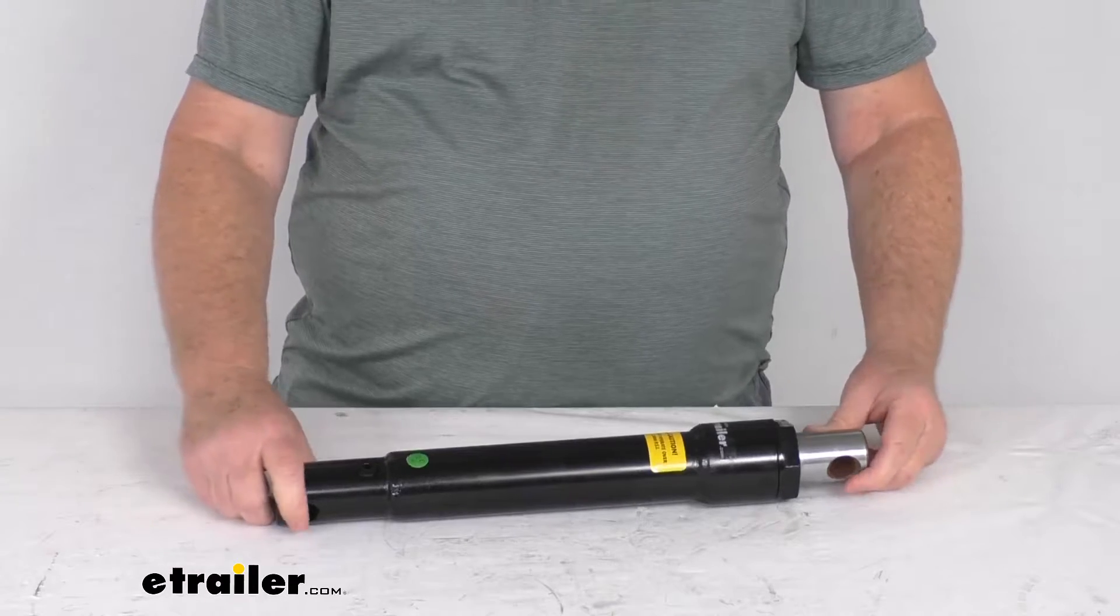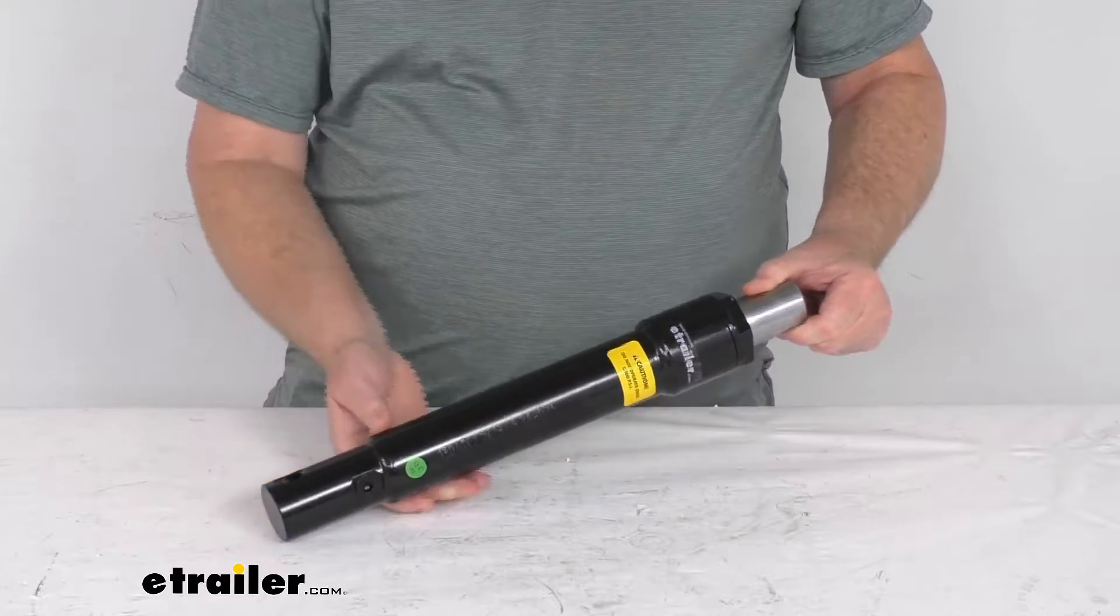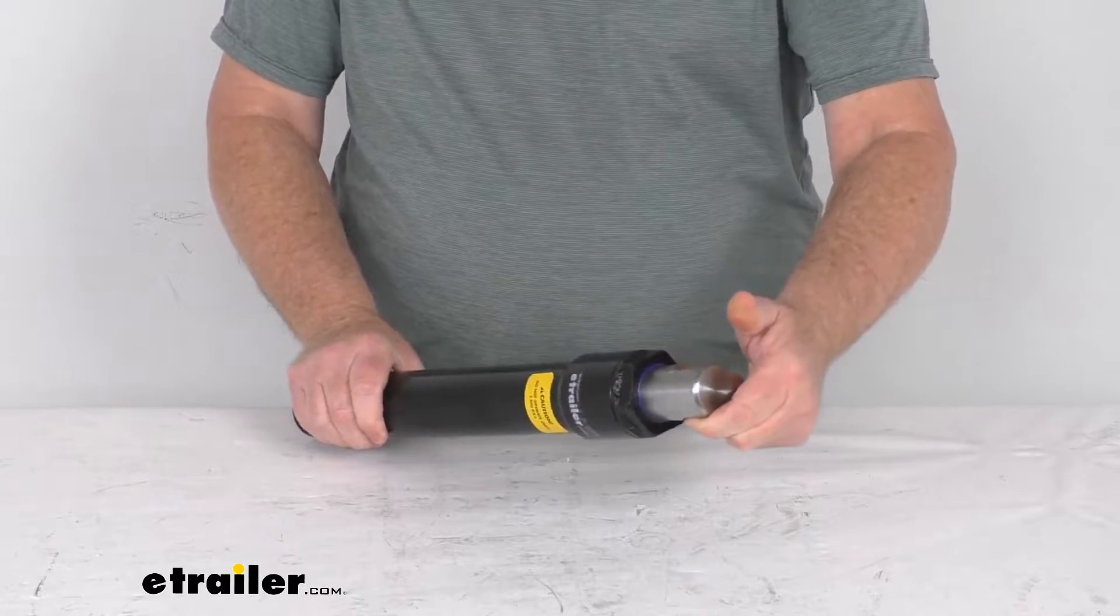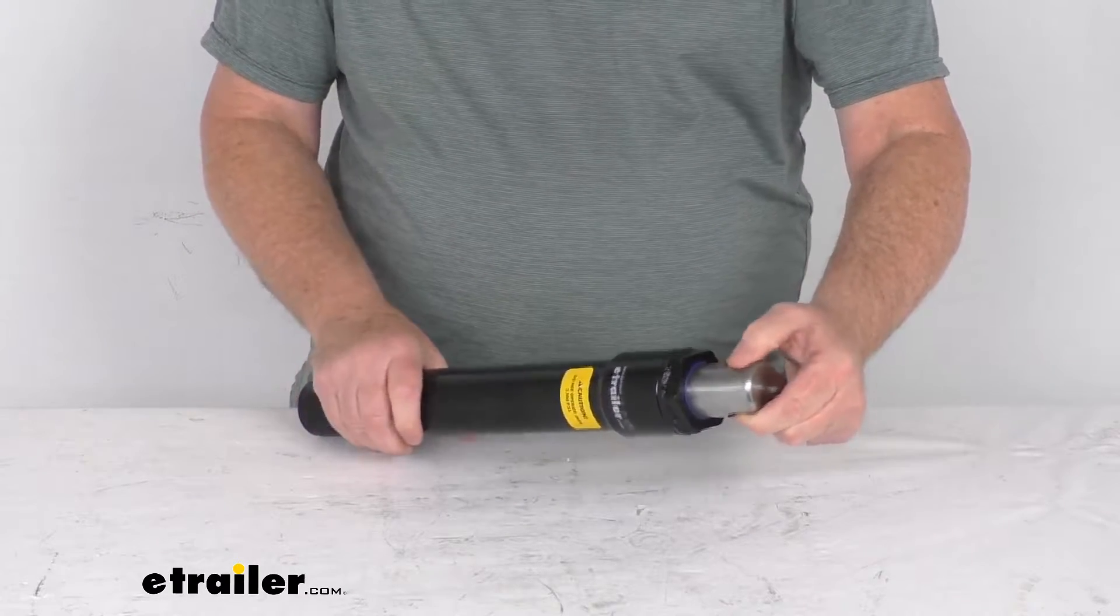Hello everybody, this is Jeff at eTrailer.com. Today we're going to take a look at this replacement single-acting lift cylinder for your Western hydraulic snowplow with an 8-inch stroke.